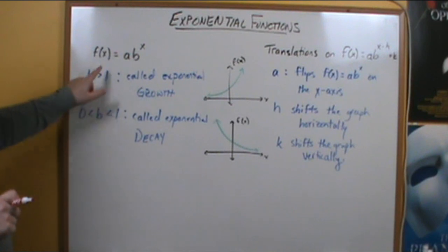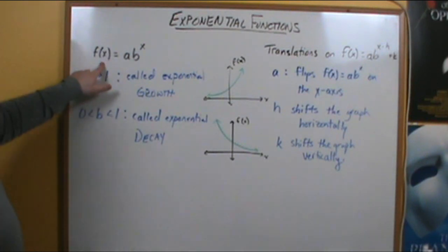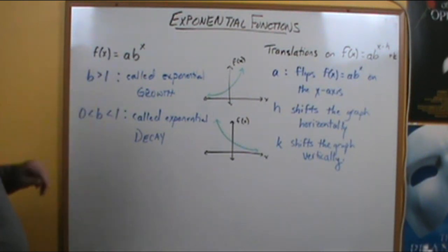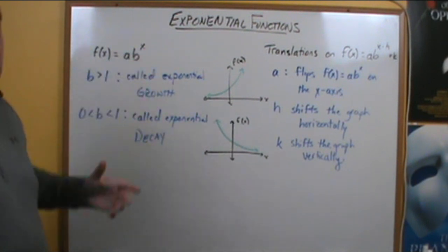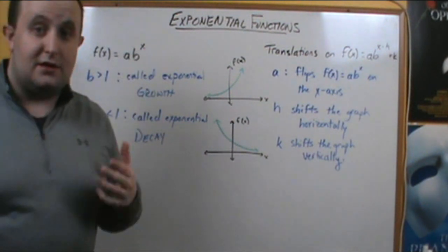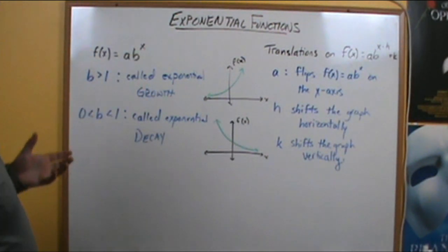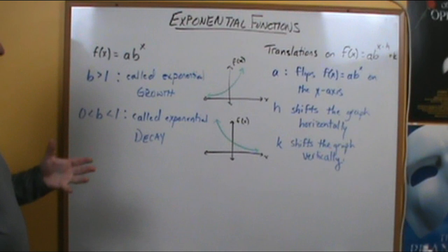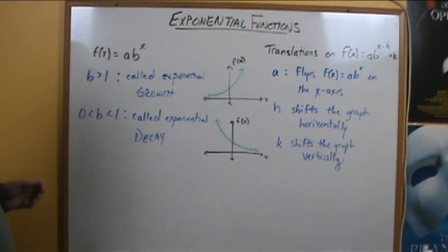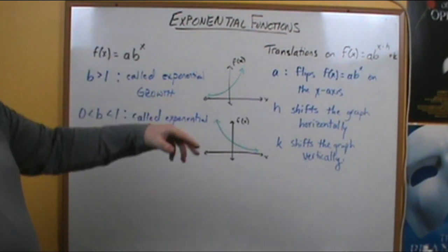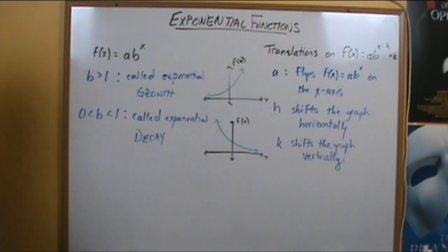In general, an exponential function is modeled by f of x equals a times b to the x. Notice our power has a variable in it — that's the difference from some of the other equations that you've graphed or solved for. Later on in the course we'll talk about solving exponential equations.